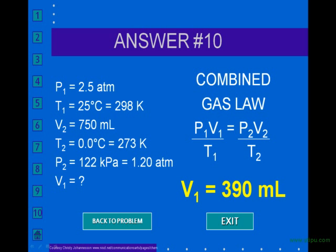So continuing on with our variables, what was the volume at the end? It was 750 milliliters. And what was the final temperature? It was 0 Celsius, or 273 Kelvin. Again, remember, convert into Kelvin by adding 273.